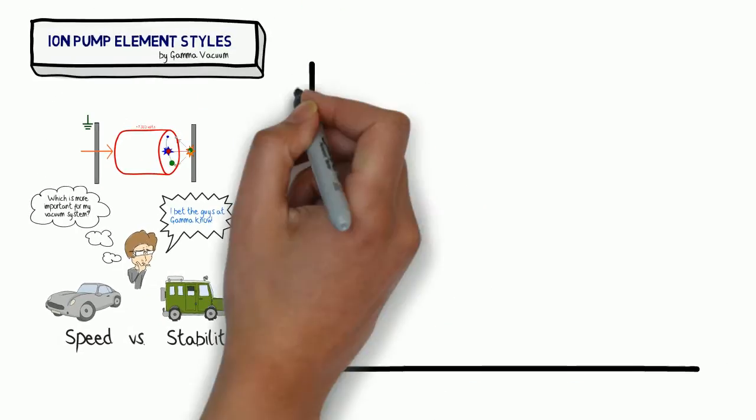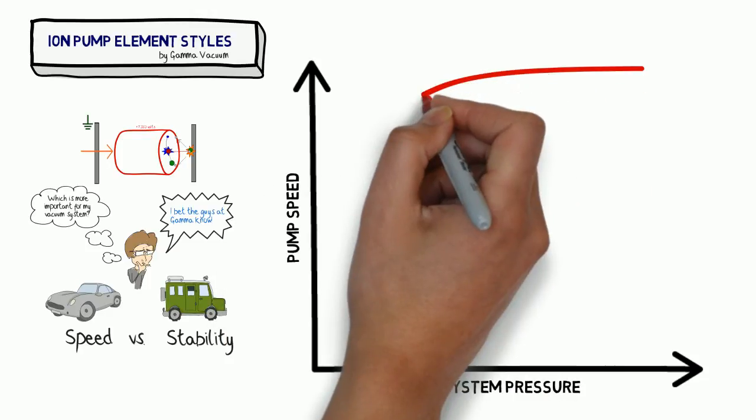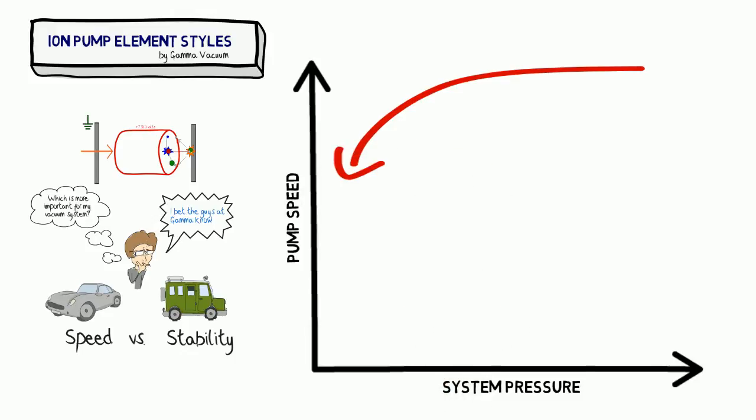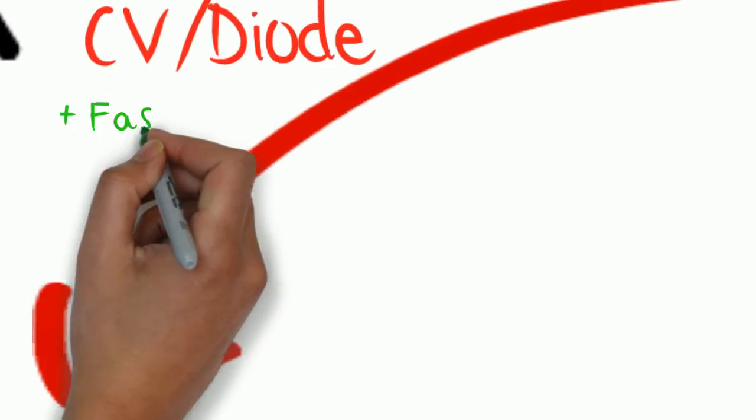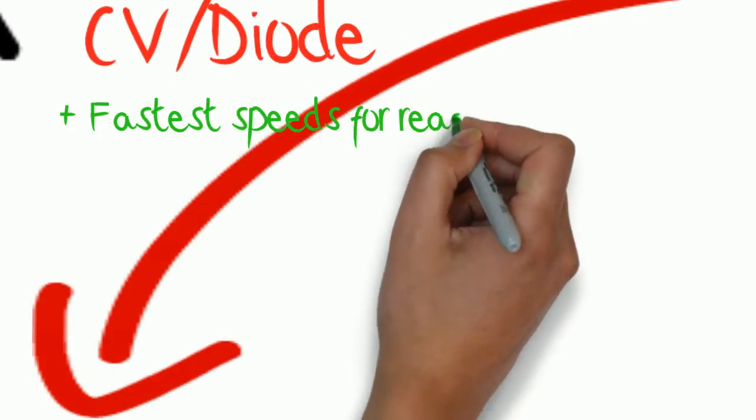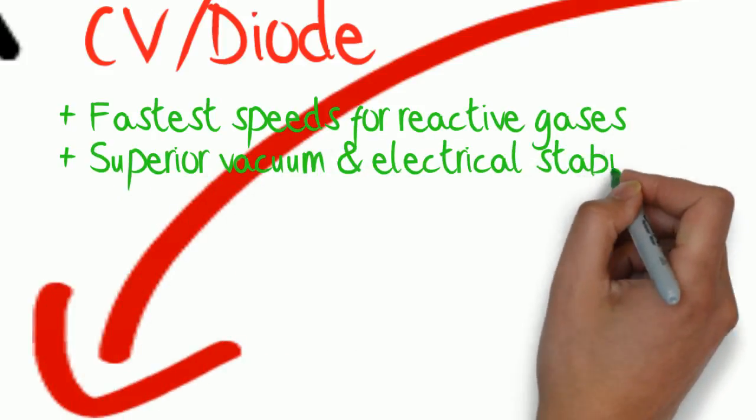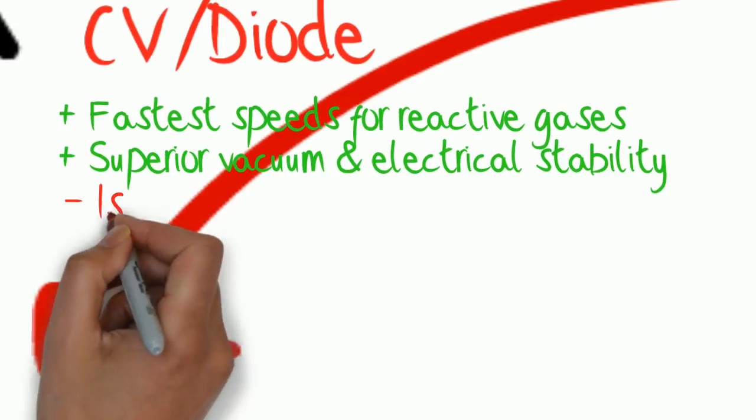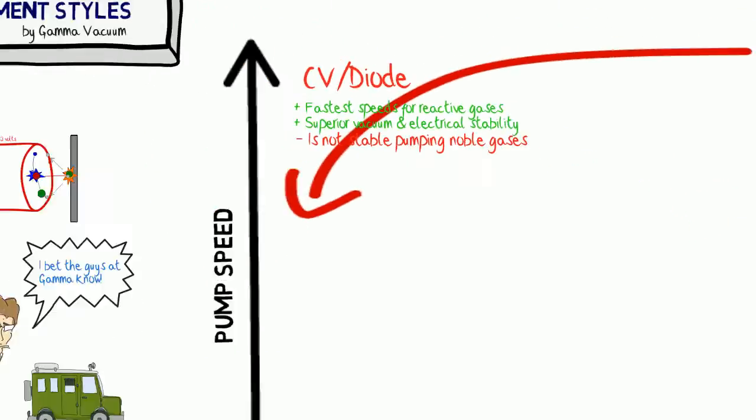We start off and measure those with our basic pump speed curve, which we have speed on the left and system pressure on the right. That red line represents a CV, or diode-style element. The advantages to that one are it's going to give us the fastest speed for reactive gases. You can basically get the best vacuum and electrical stability out of that. The downfall here is that they're not long-term stable for noble gas pumping.